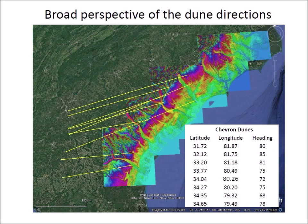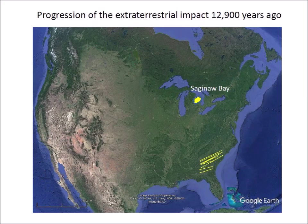This image provides a broad perspective of the dune directions. We examined eight examples showing that the wind direction had headings from 68 to 85 degrees. The southern latitudes in Georgia were associated with westerly wind, whereas the northern latitudes in South and North Carolina were associated with wind from the southwest. This map shows Saginaw Bay and the wind directions deduced from the orientation of the splash chevrons along the east coast.